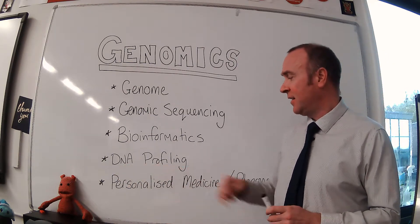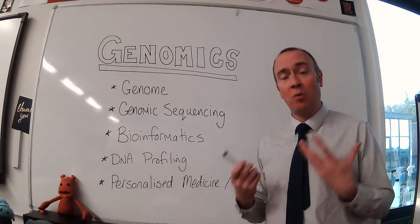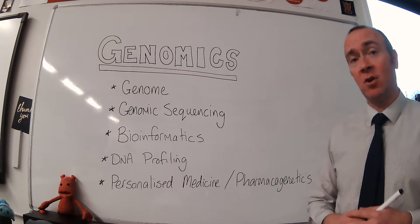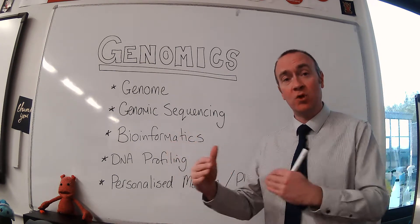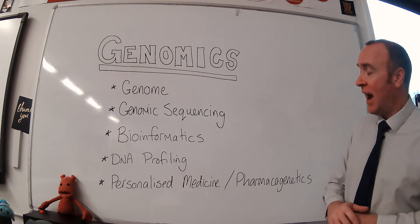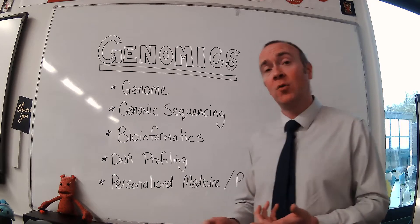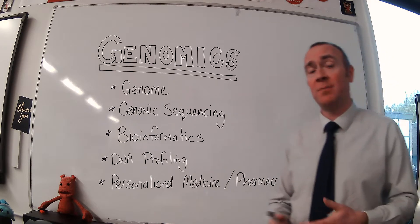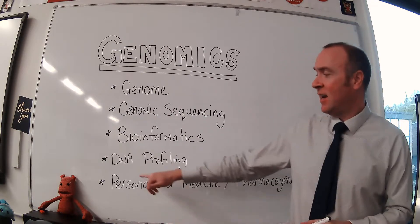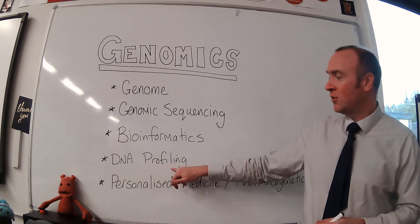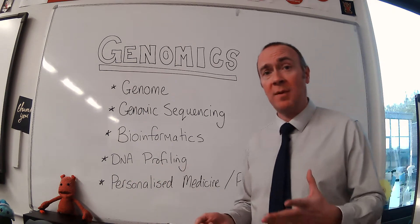DNA profiling is the second last term, and again it's more or less self-explanatory. Getting a DNA profile of somebody, or any organism, is knowing exactly what its base sequence is — what genes it has, what genes it possesses. Having a DNA profile of somebody is very helpful from a medical point of view, because you can predict likelihood of catching a disease or cancer, the same way as we talked about genomic sequencing. But there are certain ethical issues around DNA profiling which you should be aware of.